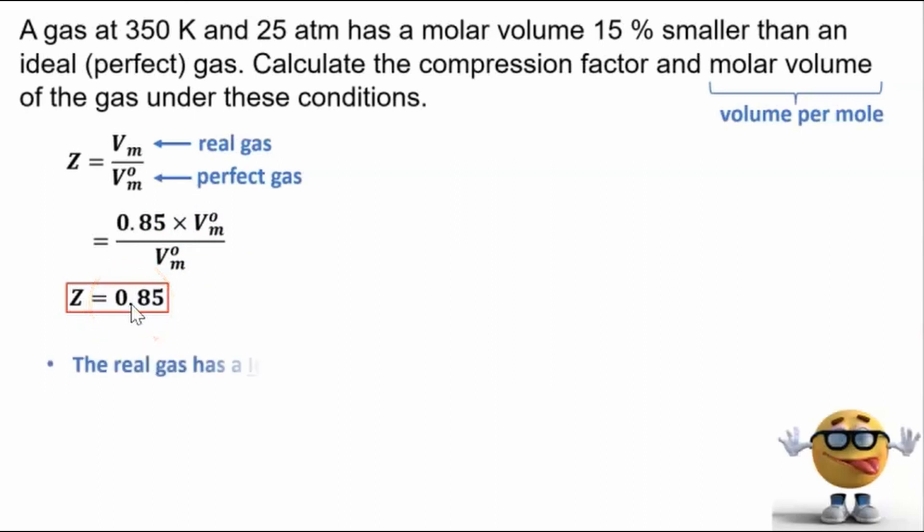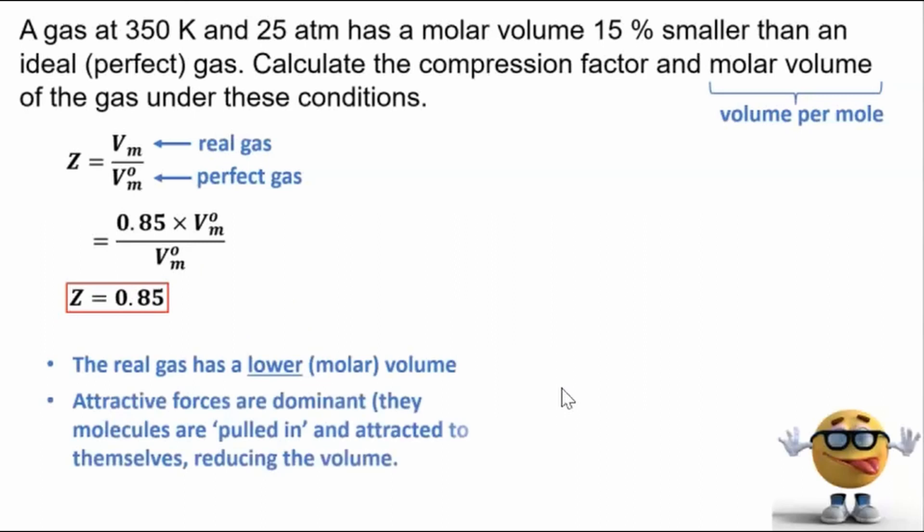The compression factor of 0.85 means that the real gas has a lower molar volume than a perfect gas. And if the molar volume is lower, it's smaller, that means there's attractive forces that are dominant. Those molecules, think of them as pulling in, attracted to themselves, reducing the volume.